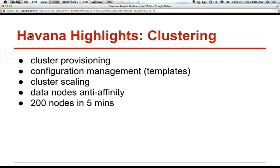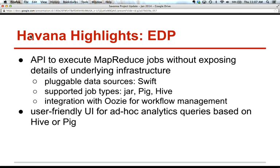As a very interesting feature, we support data node center affinity. It works like scheduler hints in Nova — we pass scheduler hints to Nova when creating instances, deploying clusters so there is only one data node per physical compute host. This makes the Hadoop cluster reliable, consistent, and keeps data consistent. We have performance testing showing that Savannah can deploy about 200 nodes in just five minutes, which is excellent performance for Hadoop cluster provisioning, especially compared to manual provisioning.